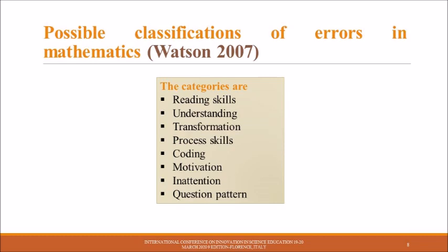Motivation: Could the pupil have correctly solved a problem if he or she has tried? Inattention: The pupil could perform the steps but makes a negligent mistake which is impossible to repeat. Question pattern: The pupil makes an error because of the way the problem was presented.